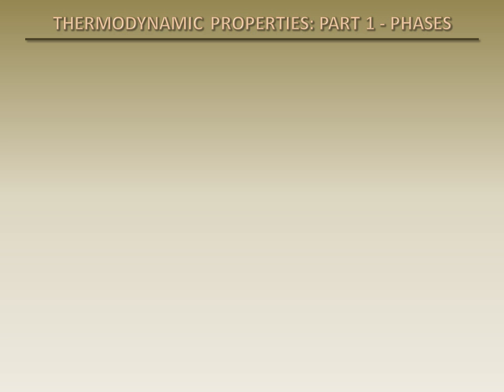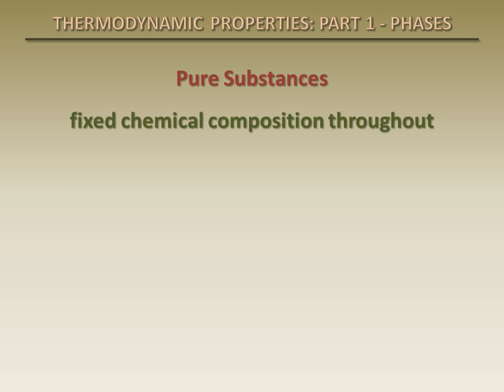In this series of presentations, we will learn how to determine the properties of pure substances. A pure substance is one which has a fixed chemical composition throughout. A pure substance does not have to be a single element or compound. A mixture of various elements or compounds can also be considered a pure substance, as long as the mixture is homogeneous. For example, air is often considered a pure substance.